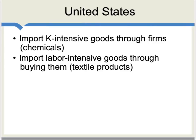When it comes to the United States, the country is especially likely to import capital-intensive goods through firms, and an example there would be chemicals. When it comes to labor-intensive goods, such as textile products, it's more likely that those goods are bought across borders from separate firms.